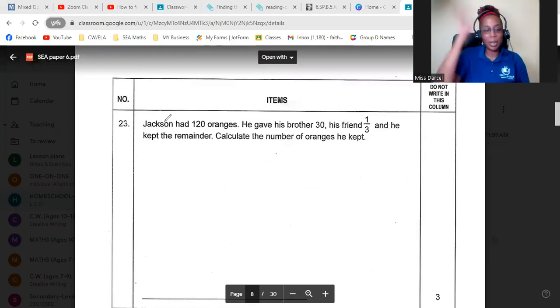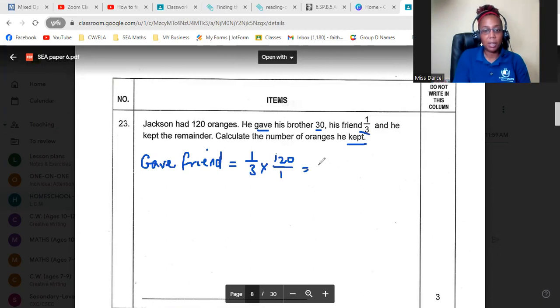Next one, we have Jackson had 120 oranges. He gave his brother 30. He gave his friend a third and he kept the remainder. Calculate the number of oranges he kept. Key word clues. So he gave his friend, there are two ways we could do this. Actually, no, there's one way. So he gave, let's do the friend part because there's a fraction. Let's get the fraction out of the way. He gave friend one third of 120, which is 40.